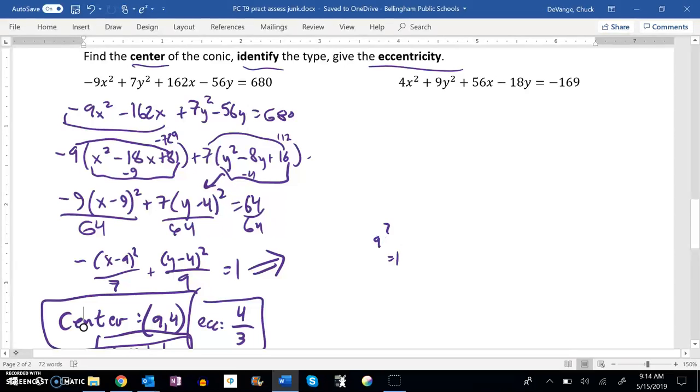So, let's rewrite it into that kind of graphing form, and then we can go from there. So, I'm going to throw the x's together. 4x squared plus 56x plus 9y squared minus 18y equals negative 169.